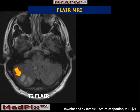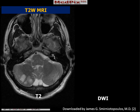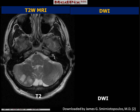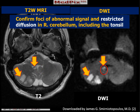FLAIR MRI demonstrates similar areas of abnormal signal hyperintensity involving the cerebellum, including the tonsil. These are confirmed by comparing the T2 MRI and the diffusion-weighted image, which demonstrates areas of restricted diffusion involving the right cerebellar hemisphere and the right cerebellar tonsil.